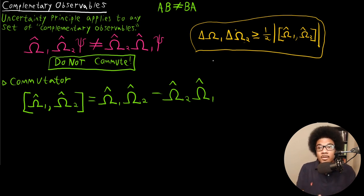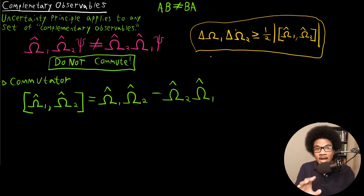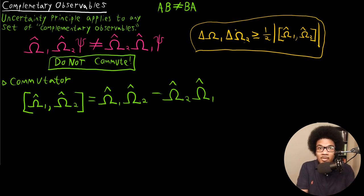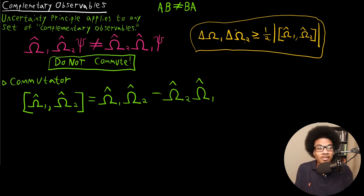So that's an introduction to complementary operators and commutators. In the next video, I'll show you that position and momentum are complementary observables. We'll evaluate their commutator and show you where that lower bound in the uncertainty principle actually comes from.